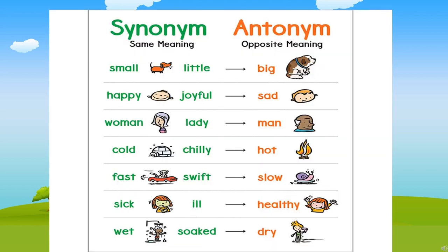There are some examples of synonyms and antonyms. The synonym for small is little. The antonym for small is big. The synonym for happy is joyful. The antonym for happy is sad. The synonym for woman is lady. The antonym for woman is man. The synonym for cold is chilly. The antonym for cold is hot.